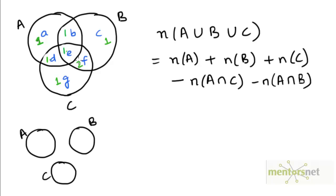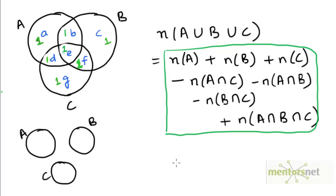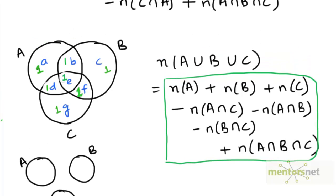But subtracting B∩C also brings the count of region E down to zero, which is a problem — we do want those elements counted once. The region E can be expressed as A intersection B intersection C, since it is common to all three sets. So we add back the number of elements in A∩B∩C, increasing their count to one. Now every region has been counted exactly once in the formula, which is the same formula we derived above.